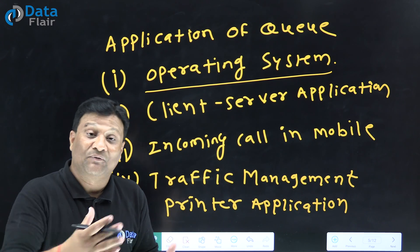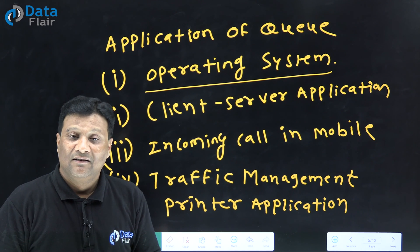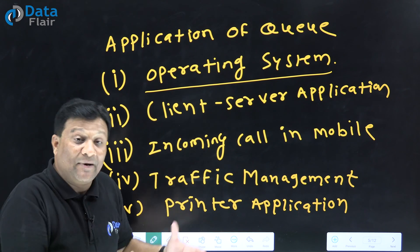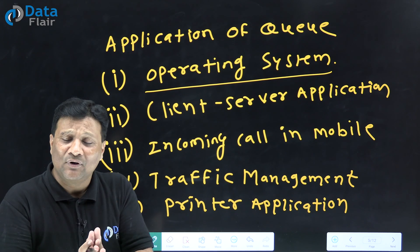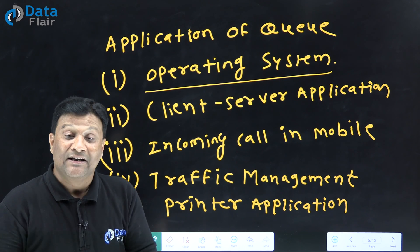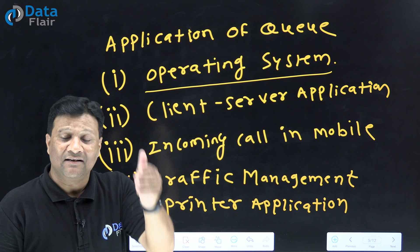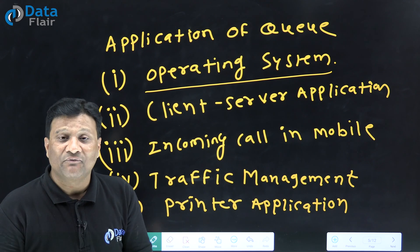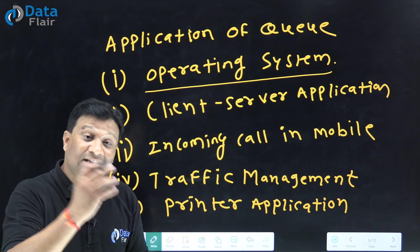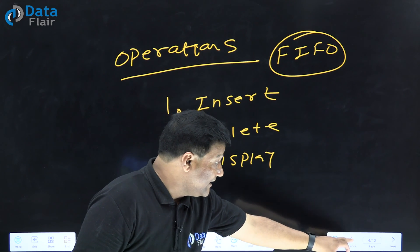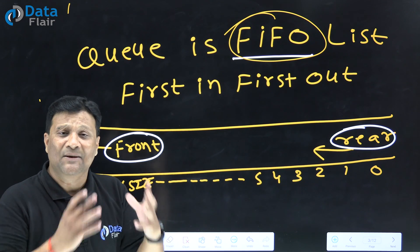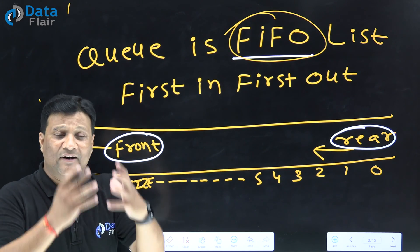So these are the applications of Queue where Queue is implemented. Queue is a data structure concept that follows the first-in-first-out rule, which mainly performs three operations: insert, delete, and display. We discussed applications of Queue. When we talk about insert or delete, the end from which element is inserted is called rear end, and the end from which element is deleted is called front end. These are the simple definitions and concepts of Queue for your exam and interview.